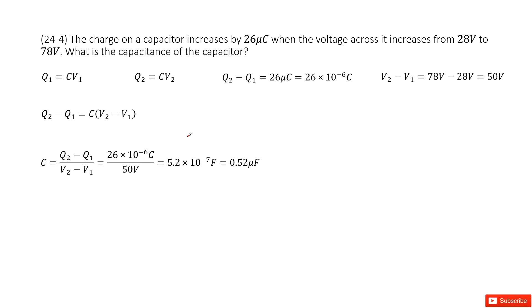From these two equations, we subtract the first from the second to get q2 minus q1 equals C times (V2 minus V1). From this equation, we can solve for the capacitance C.